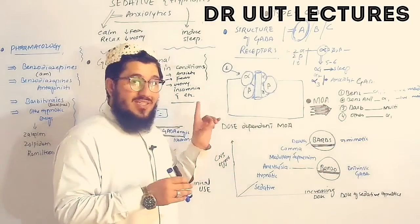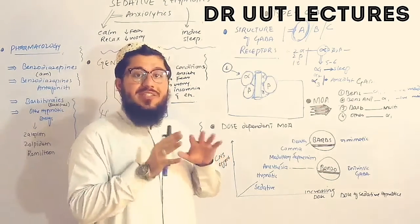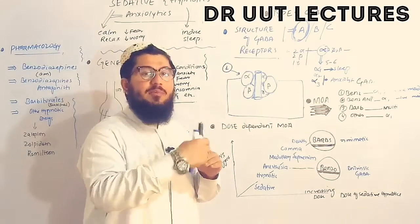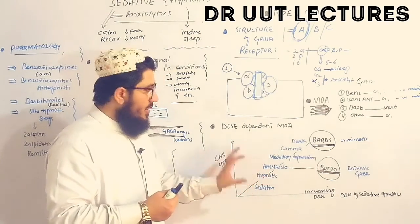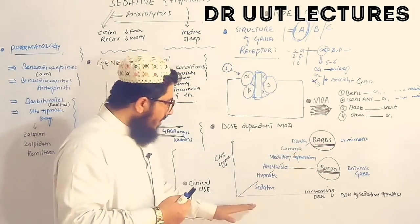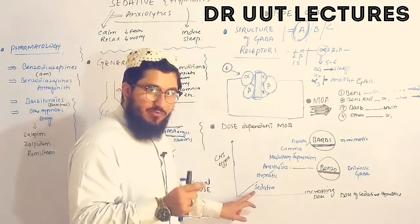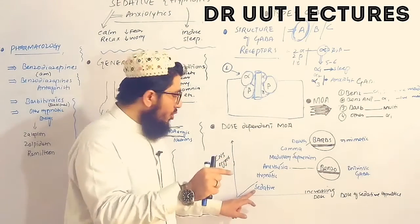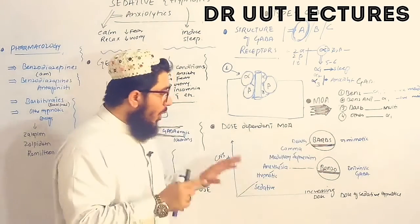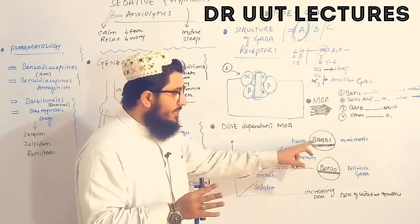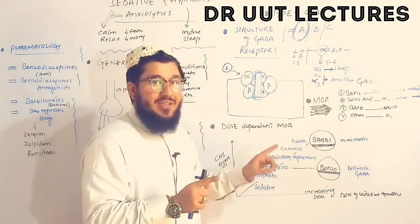Dose-dependent mechanism of action: sedatives and hypnotics depend on dose. At small doses, they cause sedation. As the dose increases, a hypnotic effect is seen. Further increases lead to anesthesia, then medullary depression, then coma, and potentially death. A graphical comparison of benzodiazepines versus barbiturates plots increasing dose on the x-axis against CNS effect on the y-axis.